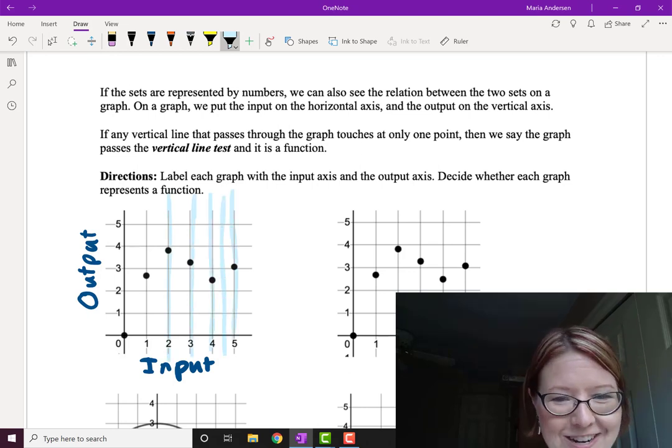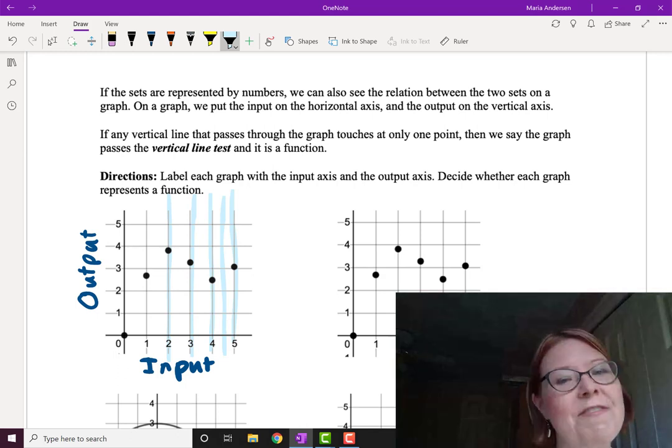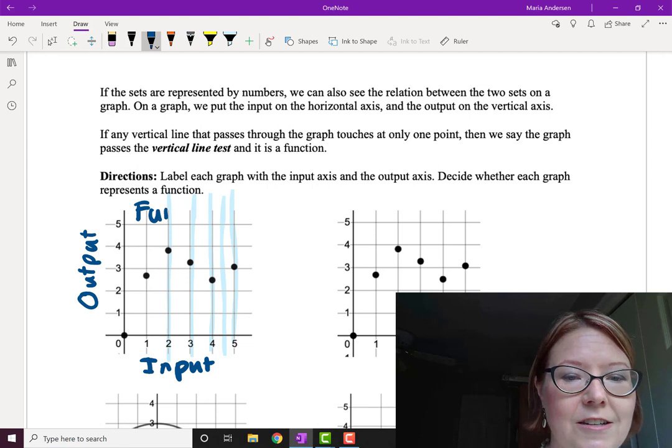If it only touches at one point or not at all, then this is a graph that passes the vertical line test. And so this is a function.